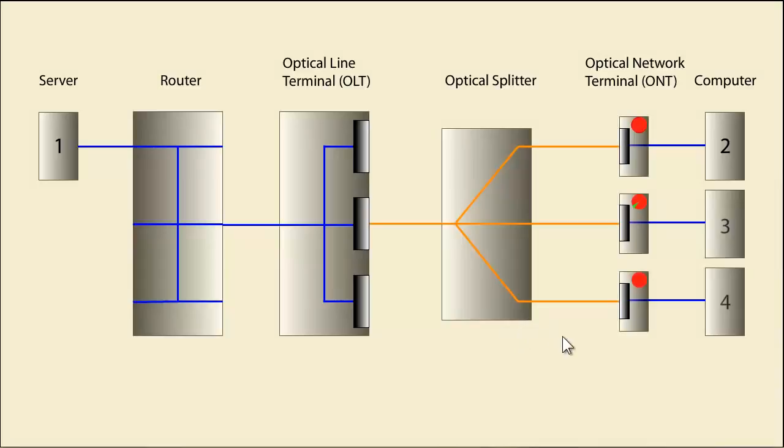Then, the individual fibers coming out of the splitter go to another device called the optical network terminal, which takes the fiber signal and converts it back into a conventional copper-type signal. Again, the orange is the fiber, blue is copper.